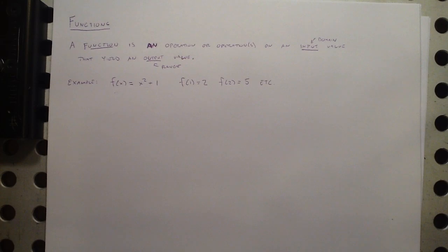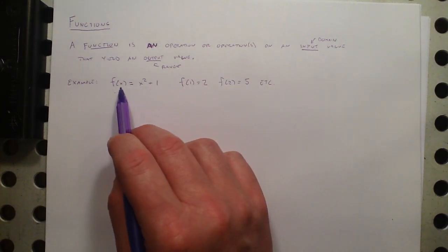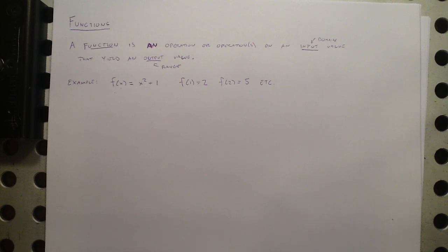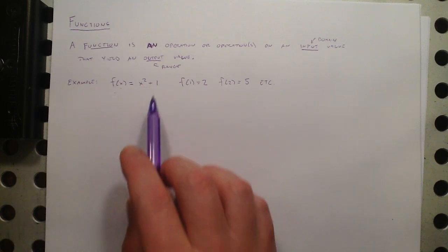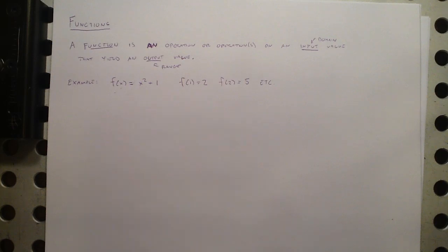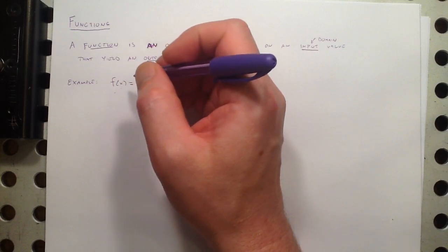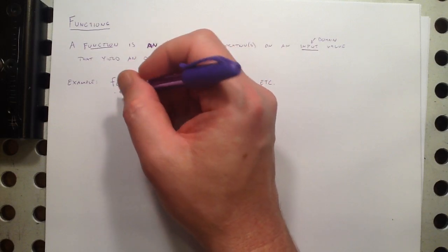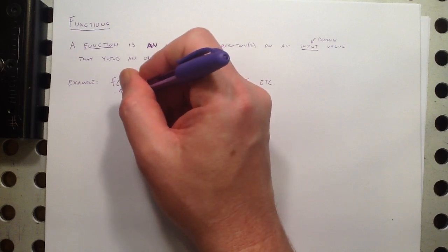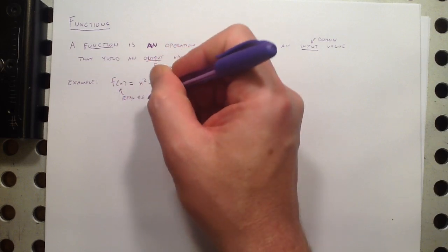This particular function — you can put in any number you want. There are no domain restrictions here. There's nothing about these particular operations that require us to be careful about what x values we put in. You can put any real number in here, square it, and then add 1. Worth noting here that the functions we'll study in calculus are functions of a real variable — real numbers only.